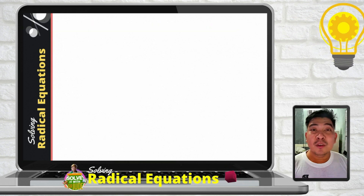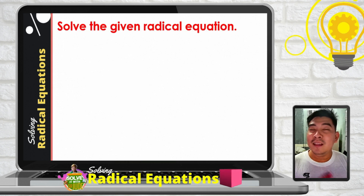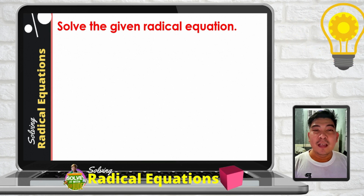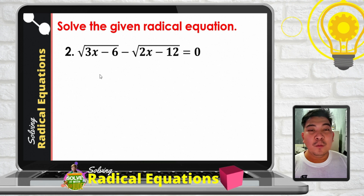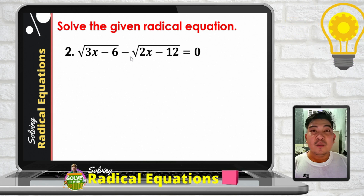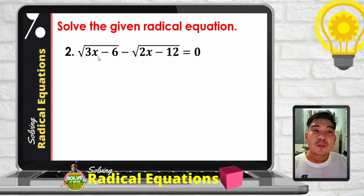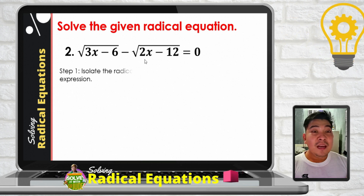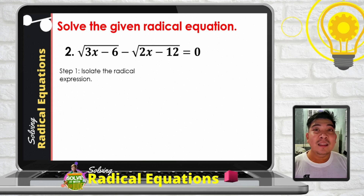It is important to check each solution, because later we will encounter values that do not satisfy the given radical equation. Let us proceed to example number 2: the square root of the binomial 3x minus 6 minus the square root of the binomial 2x minus 12 is equal to 0. Since two radical expressions are on one side, we must isolate them by separating the two radicals.